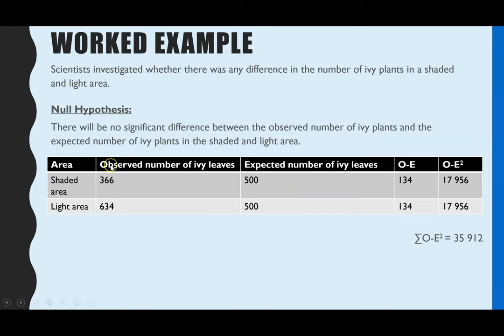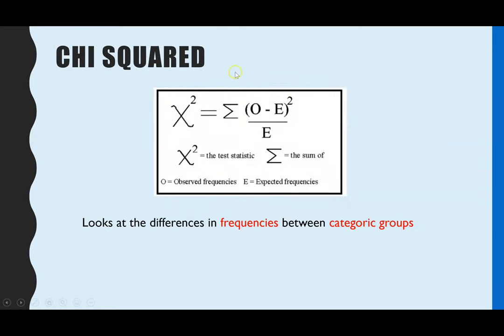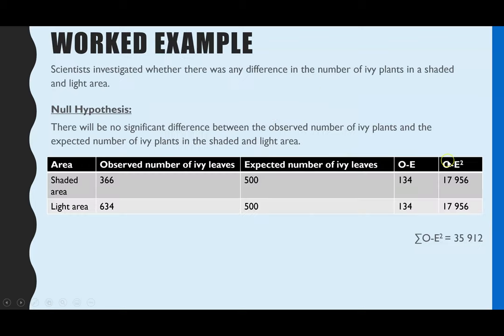We've got our shaded and light area, the number of ivy we observed, the number we expected. Then the formula is the sum of the observed minus expected squared divided by expected. So what I've done first is the observed minus the expected, then squared, and then the sum of that column. Now we have the sum of the observed minus the expected squared, we can put that data into the rest of the formula. The last stage is dividing that by the expected number, which in our case was 500.